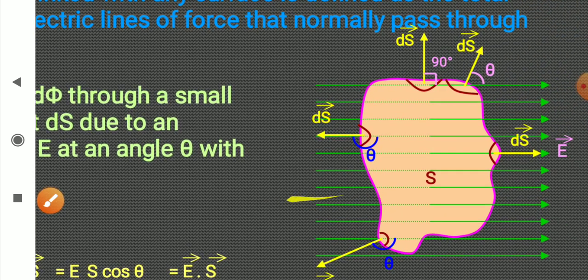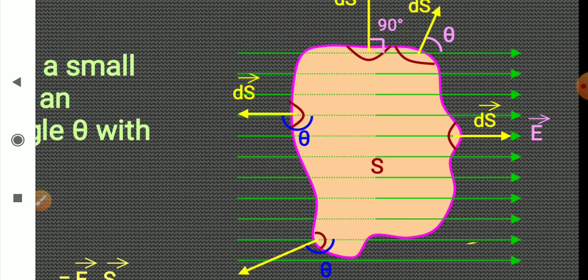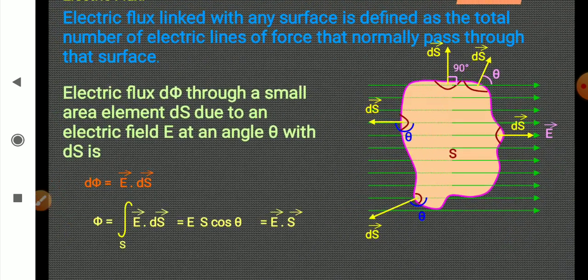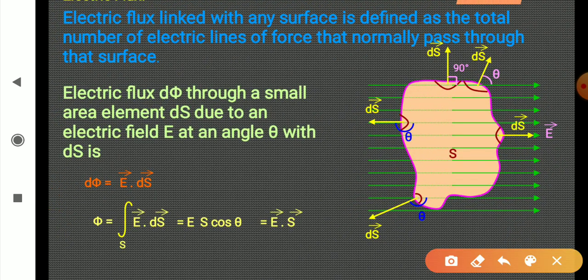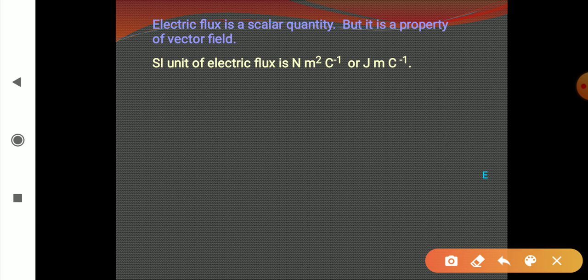In this diagram, you can see the angle between electric field and area vector at different places. To find the total flux through the surface, you have to integrate it over the closed surface. This electric flux is a scalar quantity — a scalar product — but it is a property of a vector field. Its SI unit is Newton meter squared coulomb to the power minus one, or joule meter coulomb to the power minus one.